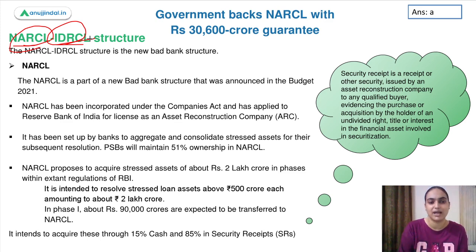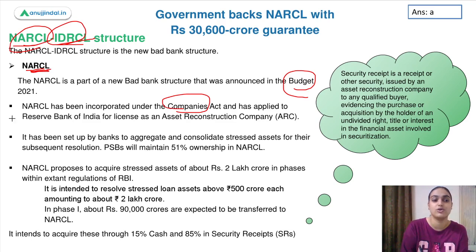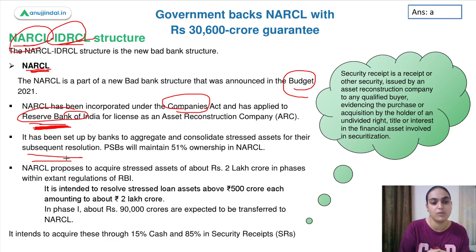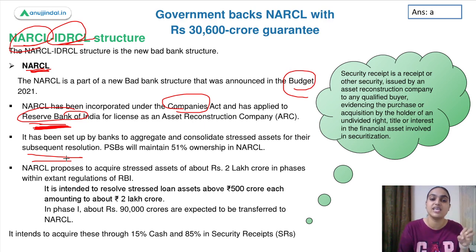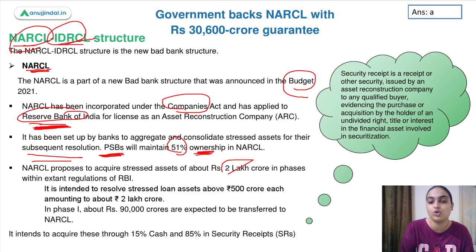To deal with this, the bad bank structure was suggested in the budget and is now taking shape. The first body set up under this is NARCL, incorporated under the Companies Act. It applied for the license of an asset reconstruction company with RBI. It has been set up by banks to aggregate and consolidate stressed assets for their subsequent resolution. The major ownership — 51% — will be that of public sector banks. NARCL proposes to acquire stressed assets of about 2 lakh crores in phases.